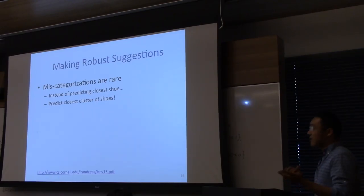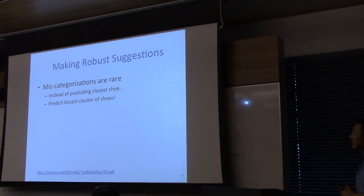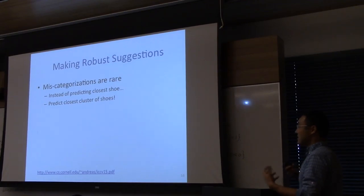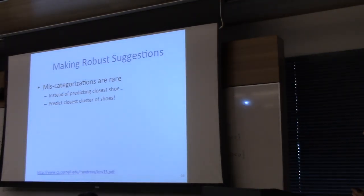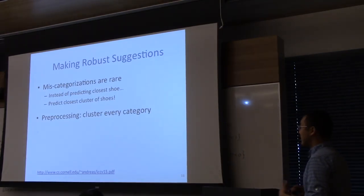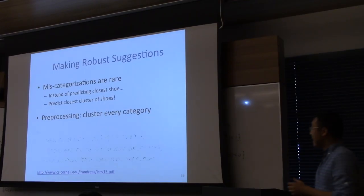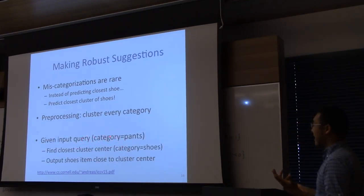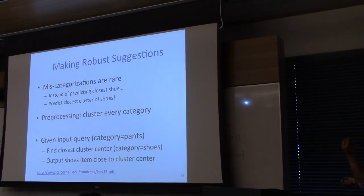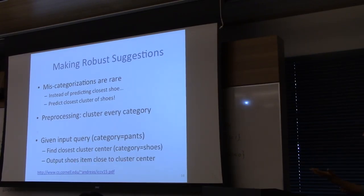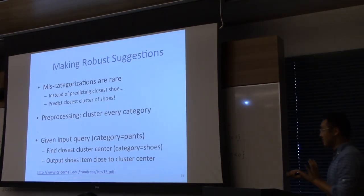The insight is that miscategorizations are rare. To be robust to them, rather than finding the closest individual shoe, they find the closest dense cluster of shoes in the embedding space. They pre-process by clustering every category — for shoes, maybe 20 to 40 clusters using k-means in the embedding space. At query time, they find the closest cluster center for the target category, then output an item close to that cluster center, which with high likelihood will not be a miscategorized example.